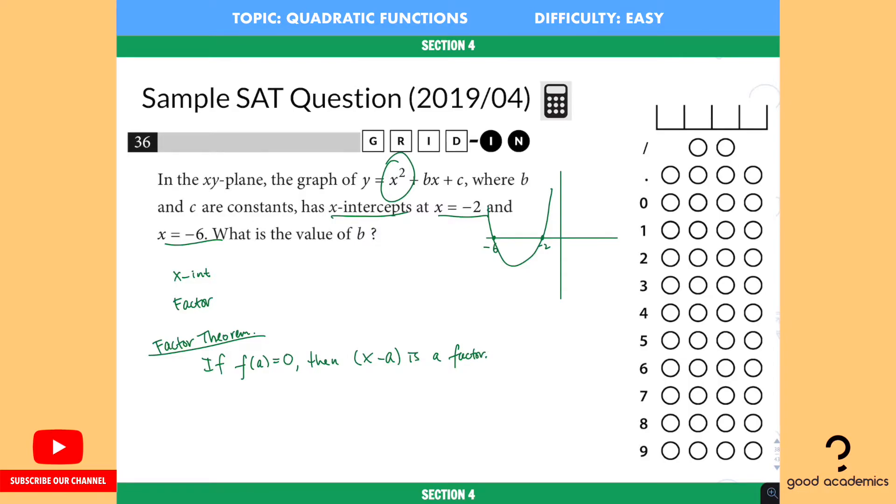That's one thing that you need to know. Now, actually, there's another thing you should know, which is other than we call them x-intercepts, we also have another name for these two points. We call them the roots, or we sometimes call them the zeros.